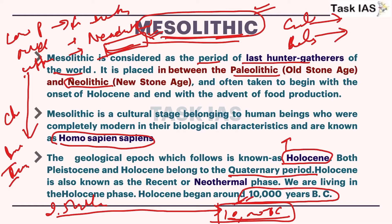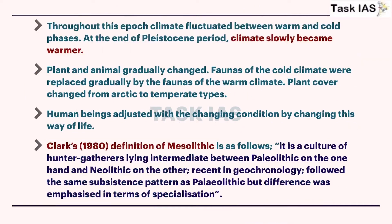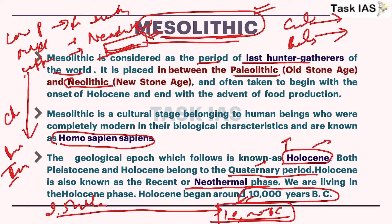This phase is also termed the neothermal phase. Regarding Holocene or the Quaternary period, I am considering that you have covered these topics in your basic geography knowledge. Throughout this time period, climate was fluctuating between warm and cold phases, and after that there was more tilt towards the warmer phase - that's why it is called the neothermal phase.